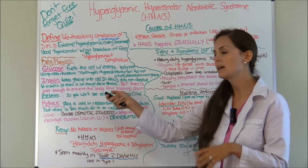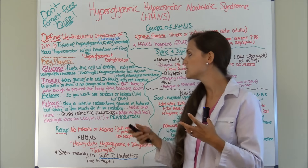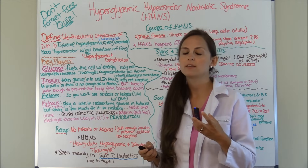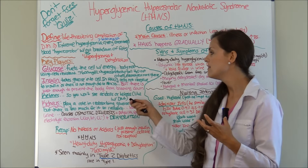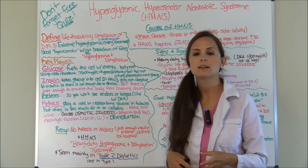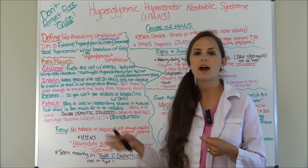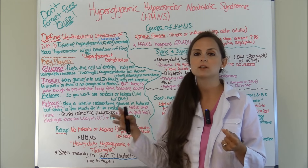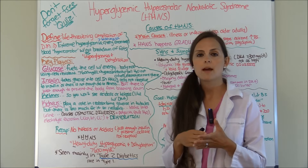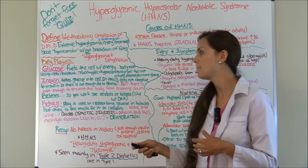Insulin takes glucose into the cells and allows your body to use it, but here the cells are not receptive to insulin. There is some insulin present, and that's why you're not going to see the breakdown of fats — because the body has just enough insulin where it doesn't have to turn to those fats, break them down, and turn them into ketones. There could also be a limited amount of insulin due to illness.